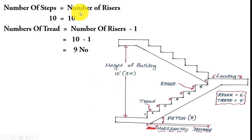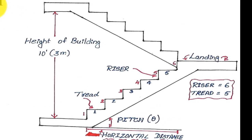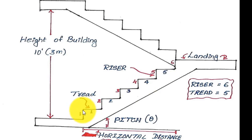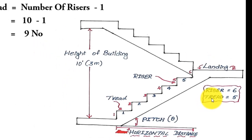The number of steps equals the number of risers. We have 10 steps, so 10 risers are required. The number of treads equals the number of risers minus 1: 10 minus 1 equals 9 treads. The riser count is always one more than the tread count. For example, in the figure there are 6 risers and 5 treads, confirming the formula: treads = risers minus 1.